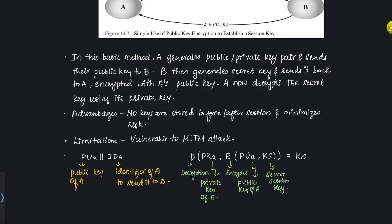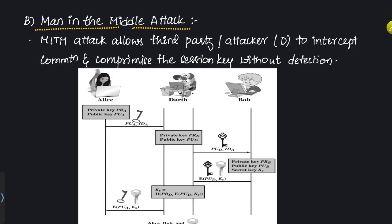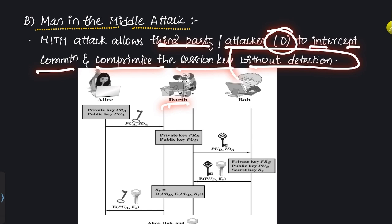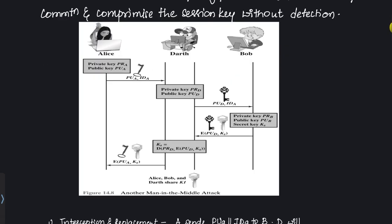Now we will look at how the man-in-the-middle attack happens. The man-in-the-middle attack allows a third party or attacker — here called Dart — to intercept communication and compromise the session key without any detection. Initially, Alice has private key PR_A and public key PU_A. Bob has private key PR_B and public key PU_B. Dart has private key PR_D and public key PU_D. The goal is for A and B to securely share a session key KS.